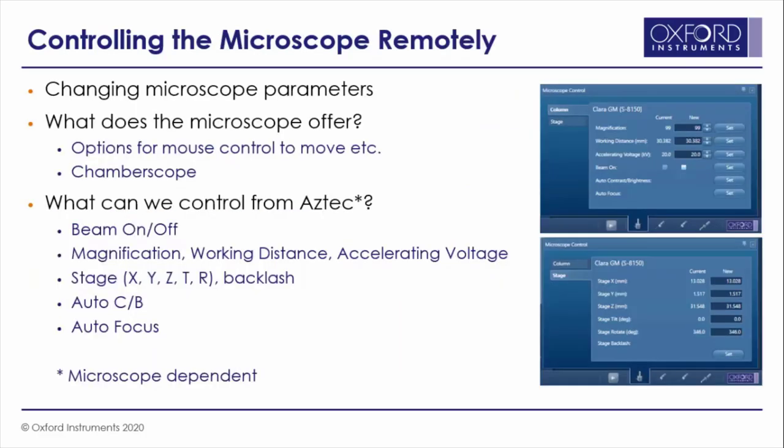Different microscopes offer different control systems. Some of these include hands-on controls like joysticks or trackboards, and others are entirely software-based. Most have options for software or mouse-based control and therefore can be used via remote connection, although the experience of doing so may be slightly different. Many microscopes also have chamberscopes that can be viewed directly in their interface, and these are invaluable particularly when you are making big moves with your sample. Aztec actually includes functionality that allows you to control many of the microscope parameters directly — parameters such as magnification, accelerating voltage, and stage positions can all be controlled directly via the microscope control panel at the bottom right of the Aztec interface.